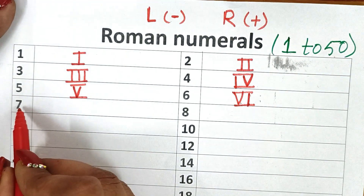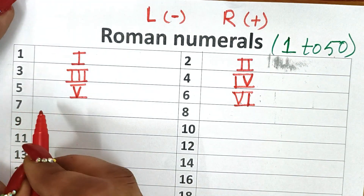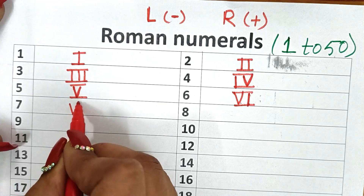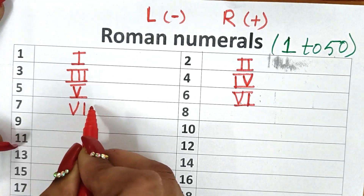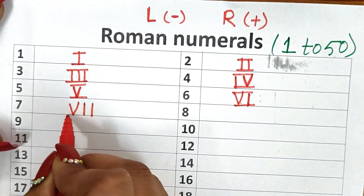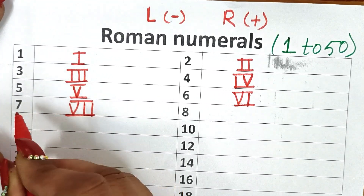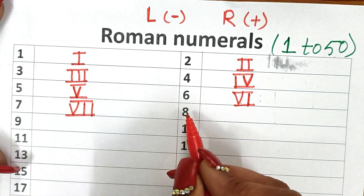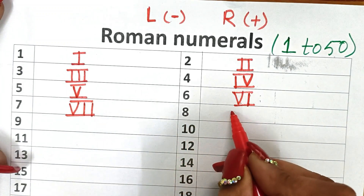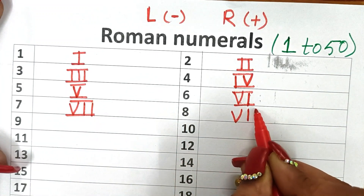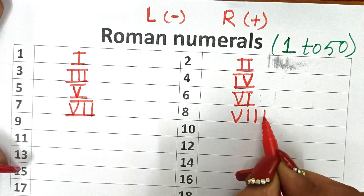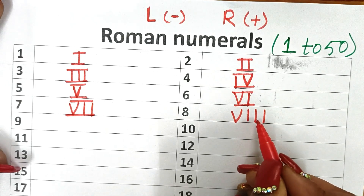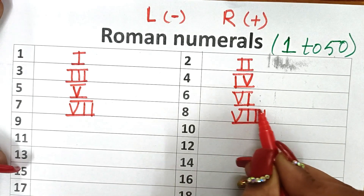Now what is this? 7. So how we will write 7? 7 means 5, 6, 7 — V, I, I is 7. Now 8, how we will write 8? So 5, 6, 7, 8 means V, I, I, I is 8.